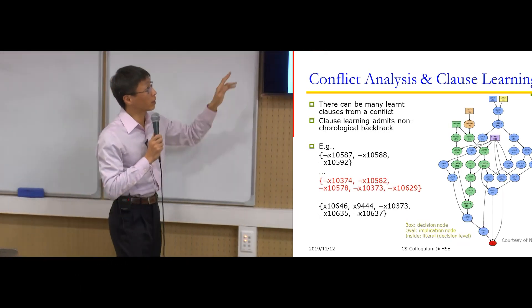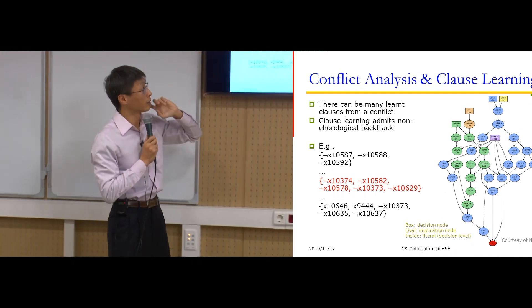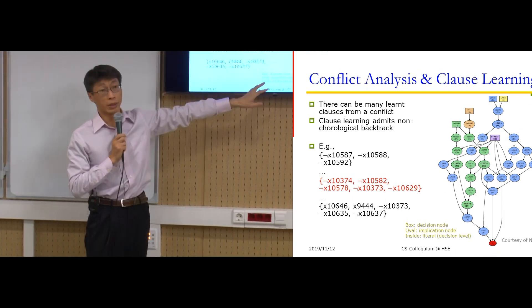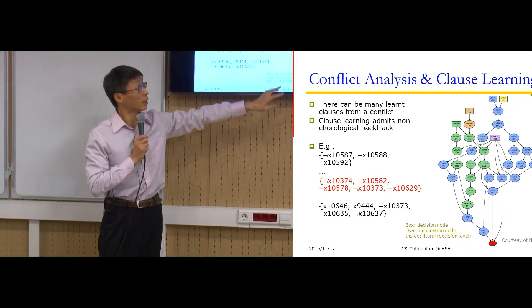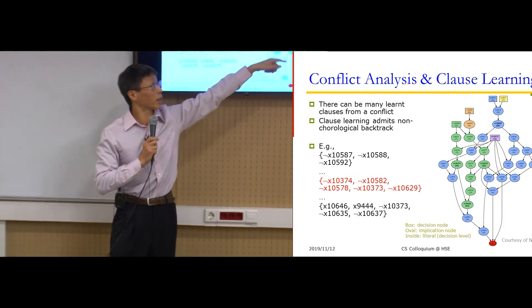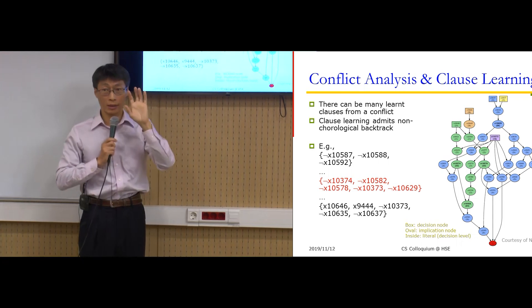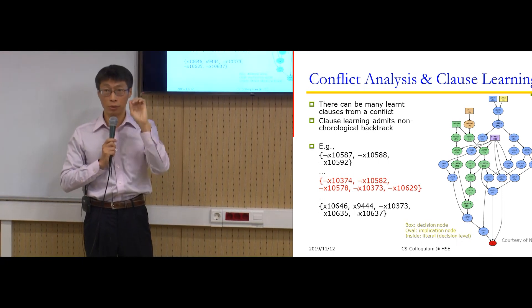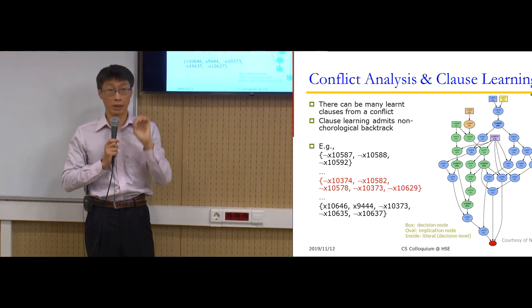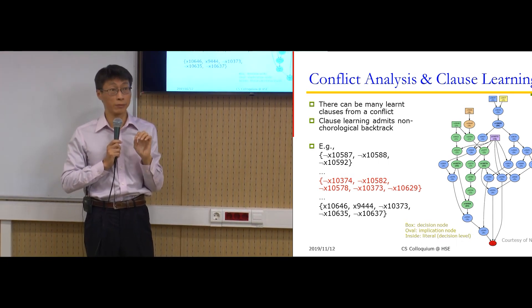The CDCL modern SAT solver is very similar to the DPLL algorithm. The difference is: when we find a conflict, we do conflict analysis and try to learn information into our clause database.